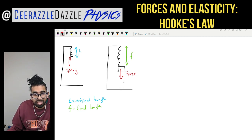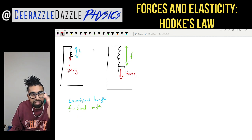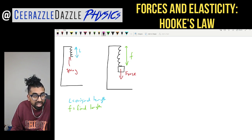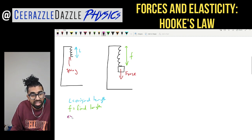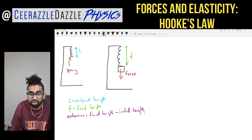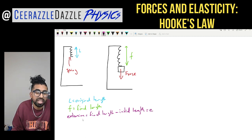We have a final length and an initial length. If I ask you what is the extension of the spring — well, the extension can be calculated by taking the final length and subtracting the initial length. So the extension of a spring equals the final length minus the initial length. We give extension the symbol lowercase e.